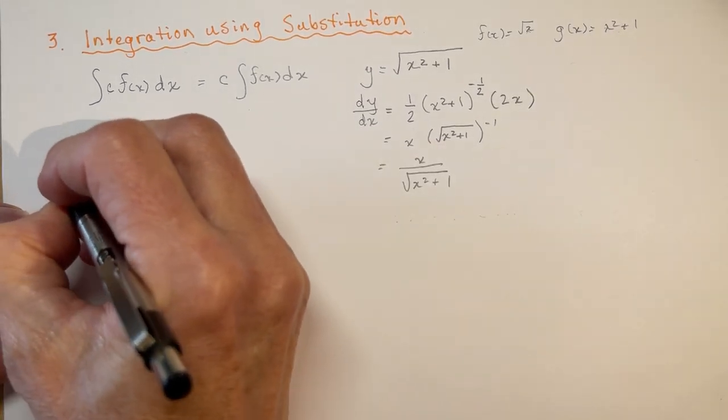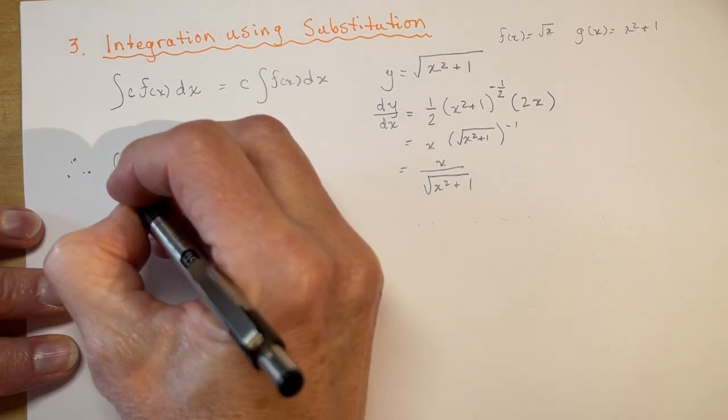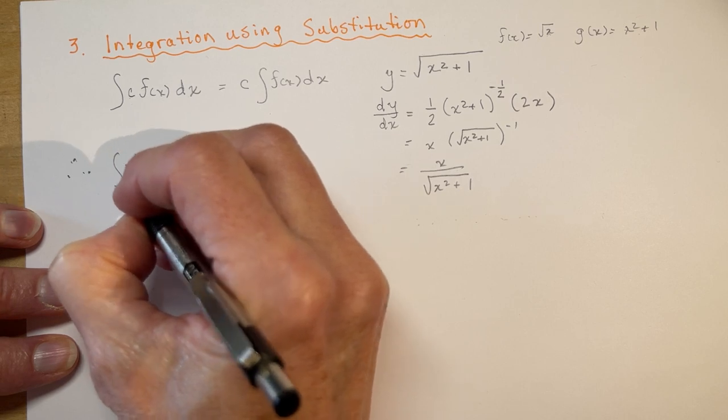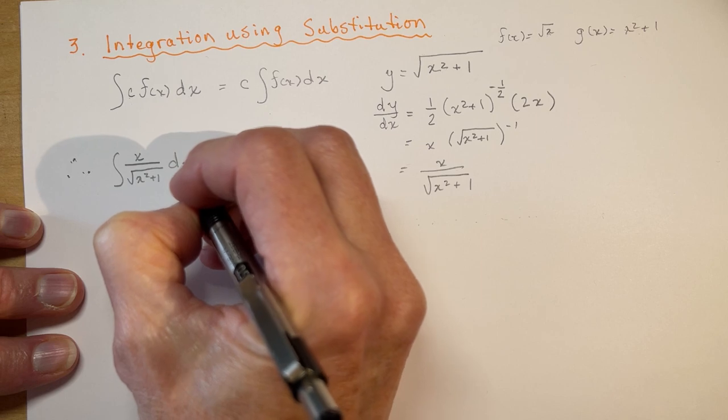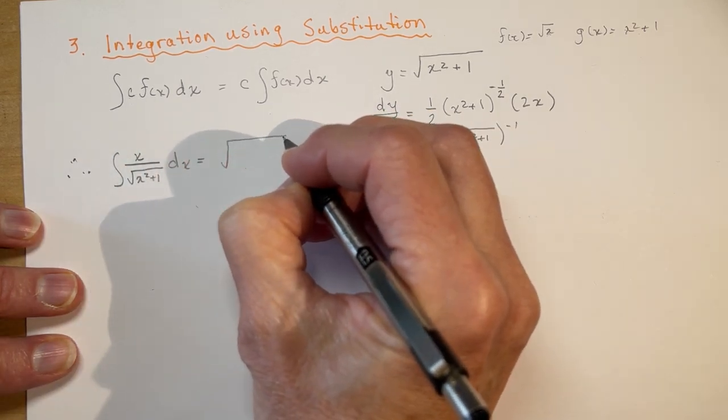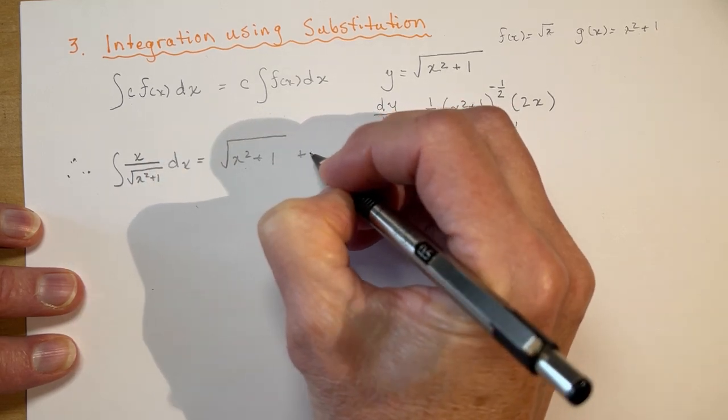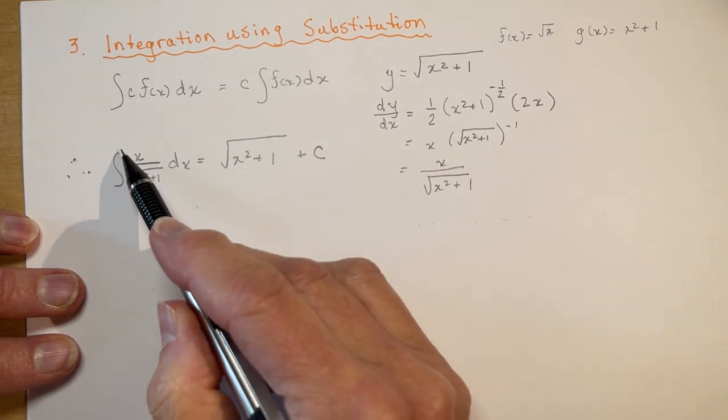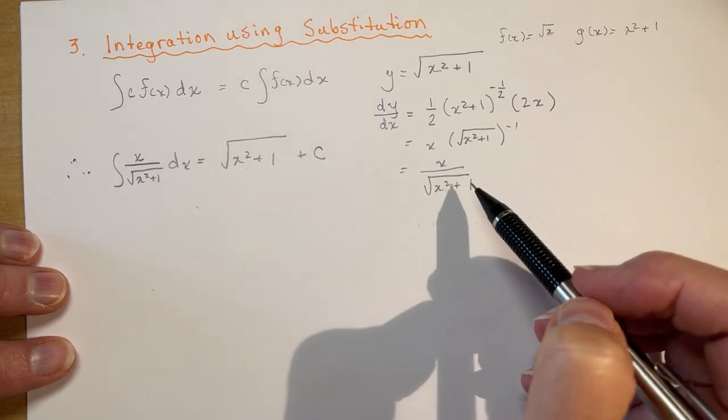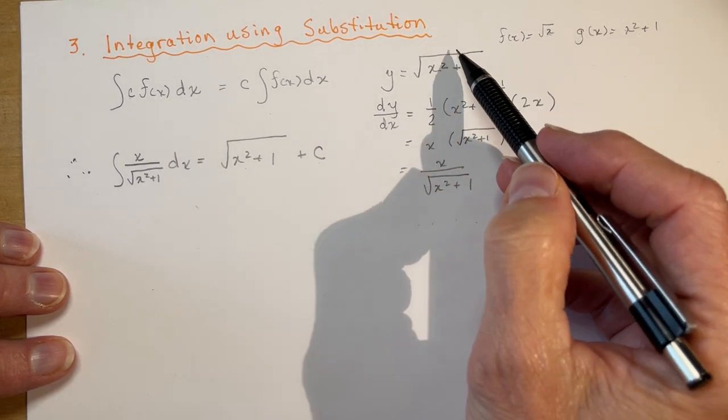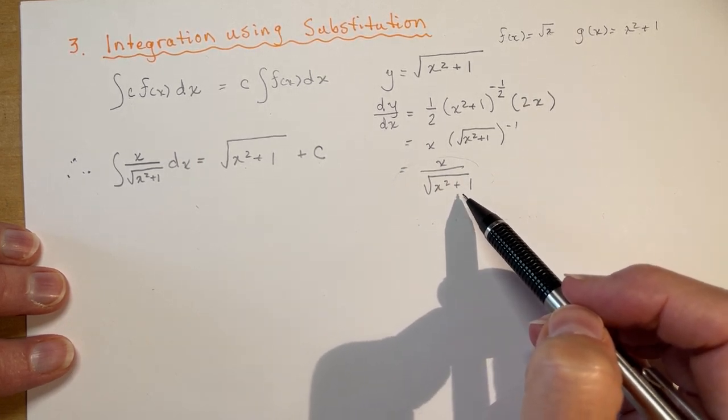So that means, we'll put that over here, that means that the integral of x over the square root of x squared plus 1 dx is equal to the square root of x squared plus 1 plus c. Don't forget, any time we take an indefinite integral or an antiderivative, we must have that plus c. So you can see how we went from this backwards to this. But if I was given this equation, how would I know how to take the integral of it?